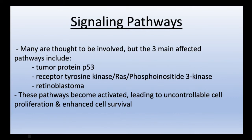These are the tumor protein P53 pathway, the receptor tyrosine kinase RAS PI3K pathway, and the retinoblastoma pathway. These pathways become activated, leading to uncontrollable cell proliferation and enhanced cell survival, ultimately leading to the progression of glioblastomas.